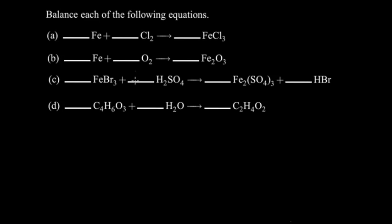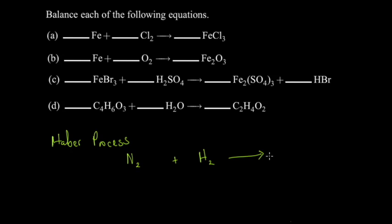We're going to illustrate using some random equations and then relate them to actual equations we want to balance. For example, the first reaction we want to balance is the Haber process — the manufacture of ammonia. It would be nitrogen gas plus hydrogen gas, and this is actually a reversible reaction, so you'd have one arrow going forward and another coming back, giving NH₃. The reversible symbol means the reaction is going in both directions — forward to form ammonia, and backward to break down into nitrogen and hydrogen.